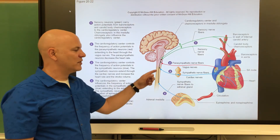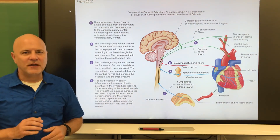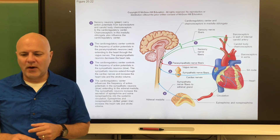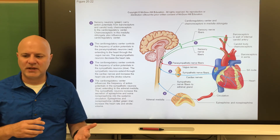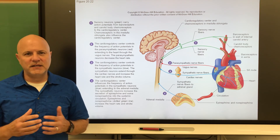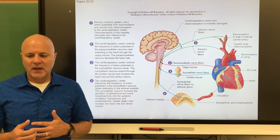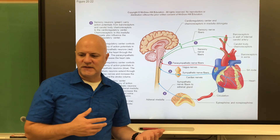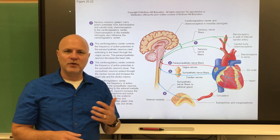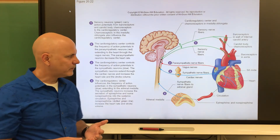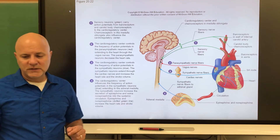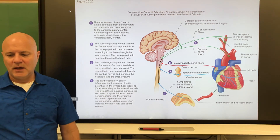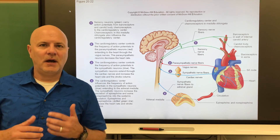The medulla oblongata contains the cardiac conduction center. Regions of the aorta are sensitive to stretching and detect increases in blood pressure, interacting with the cardiac conduction system to decrease heart rate and thereby reduce blood pressure. Temperature also plays a role: warmer temperatures increase heart rate, while colder temperatures decrease it.